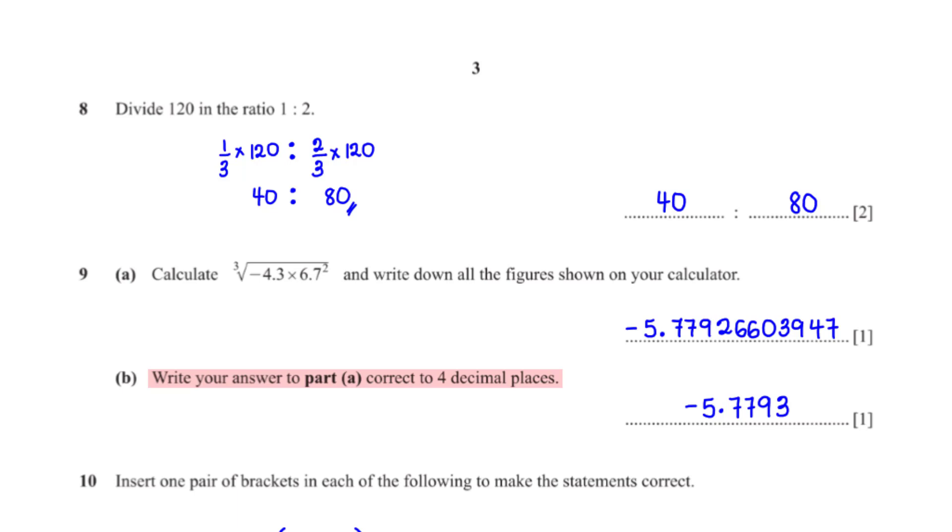Write your answer to part A, correct to 4 decimal places. The fourth number after the decimal point is 2. The number after 2, which is 6, is greater than 5. So we add 1 to 2, giving us 3. The numbers after 2 become 0. Since these zeros come after the decimal point, they are insignificant. So we have negative 5.7793 rounded to 4 decimal places.